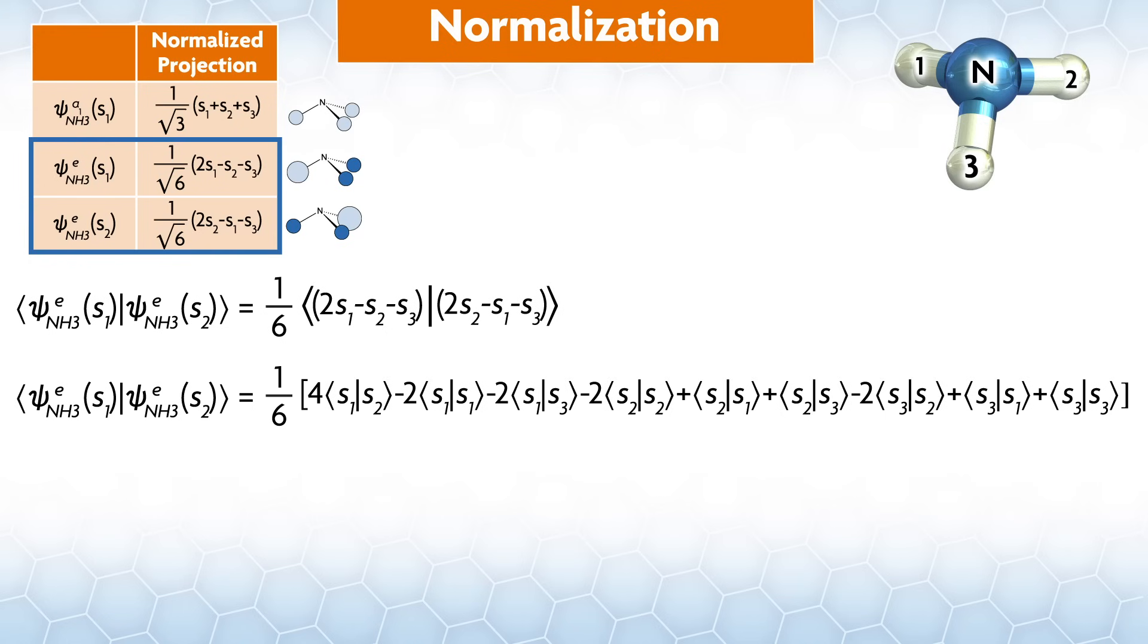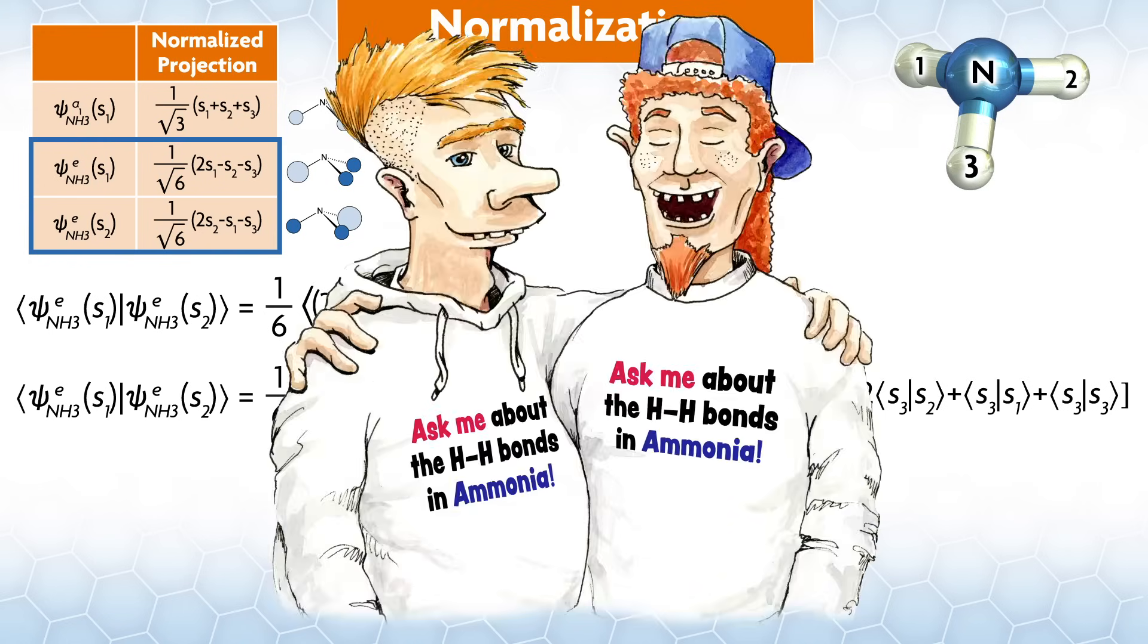Now, we will assume that the overlap between s-functions on different hydrogens in ammonia is zero. I haven't met anyone who thinks there are hydrogen-hydrogen bonds in ammonia, so I think most people agree that the overlap is zero. I'm not ruling out that such people exist because there seems to be flat earthers still, but I've never met an HH bonder in ammonia yet. One of the beautiful things about the internet is that you can bring together people with different interests. Maybe there are people out there somewhere with identical t-shirts saying, ask me about HH bonds in ammonia. If so, please send me a picture from your last party.